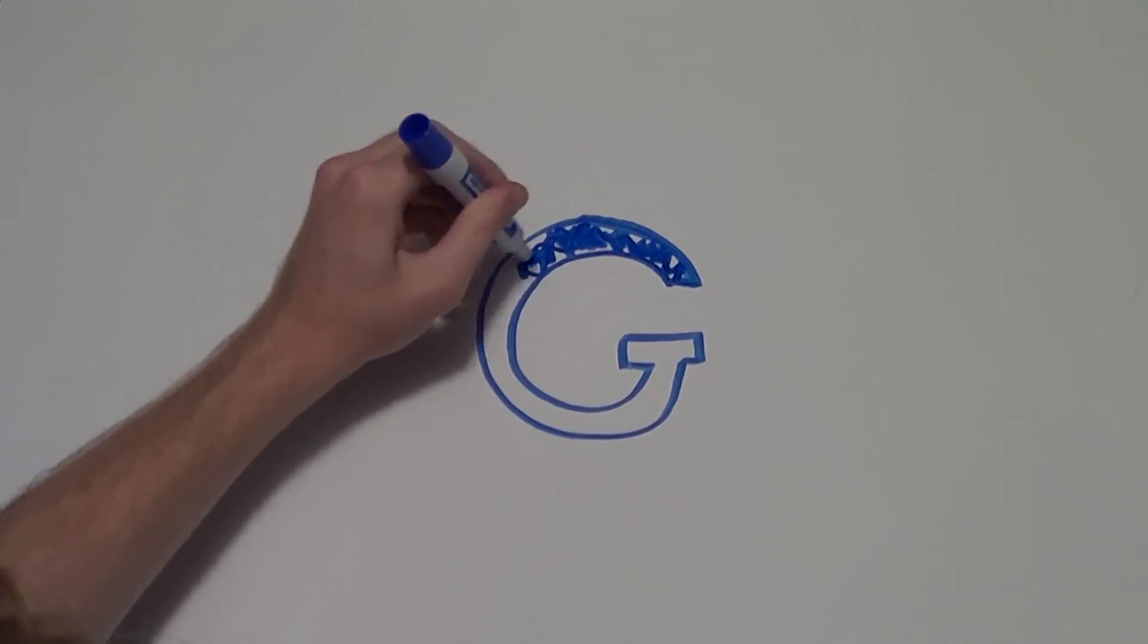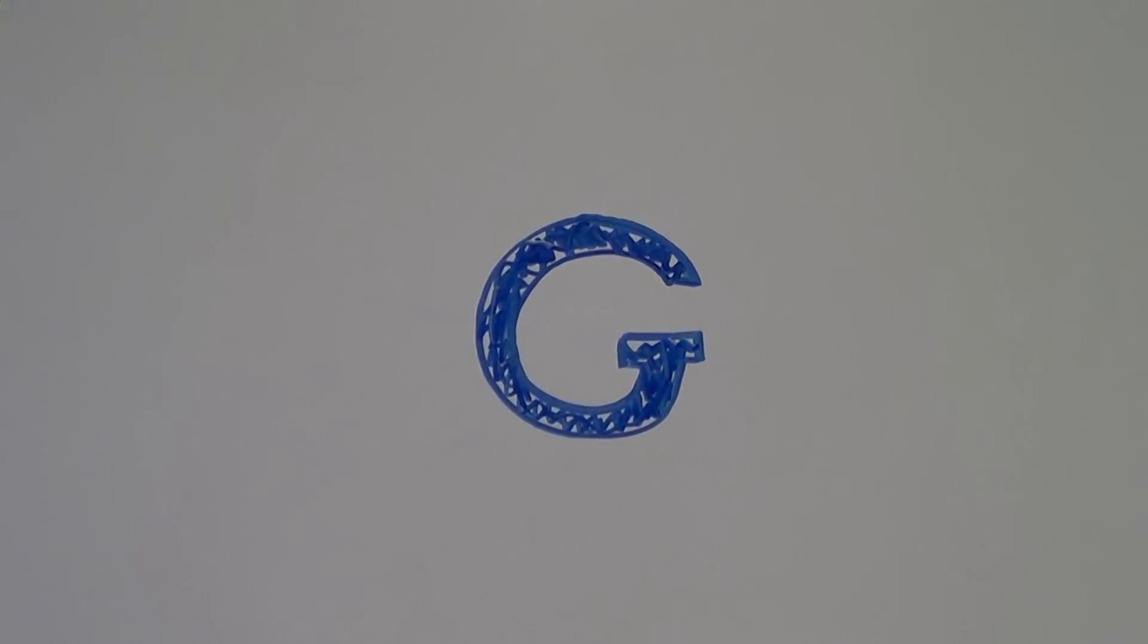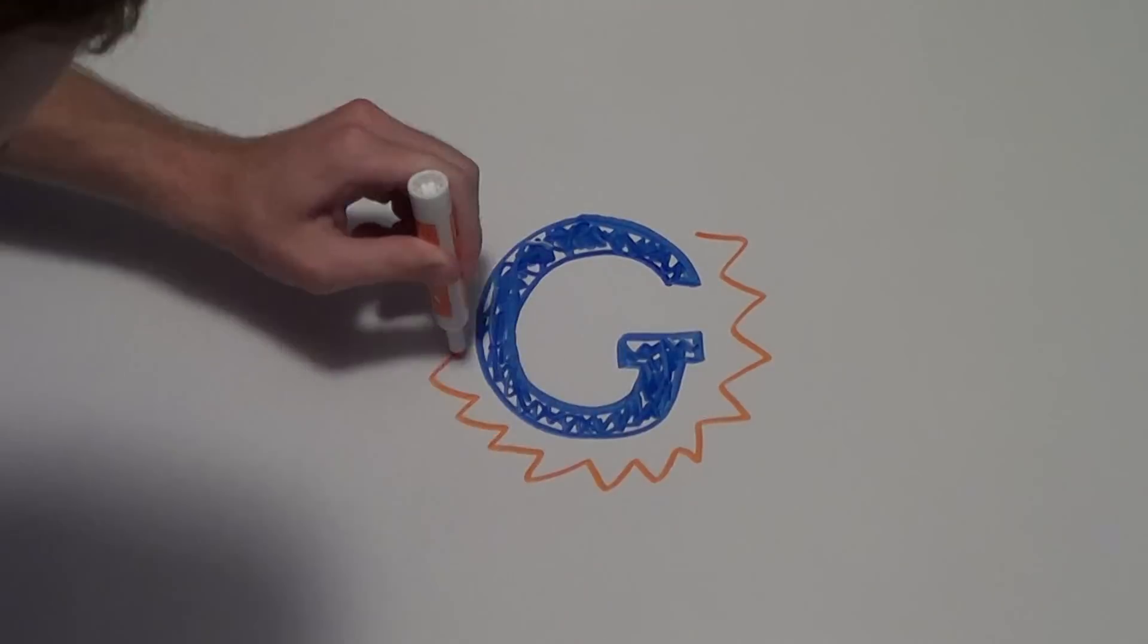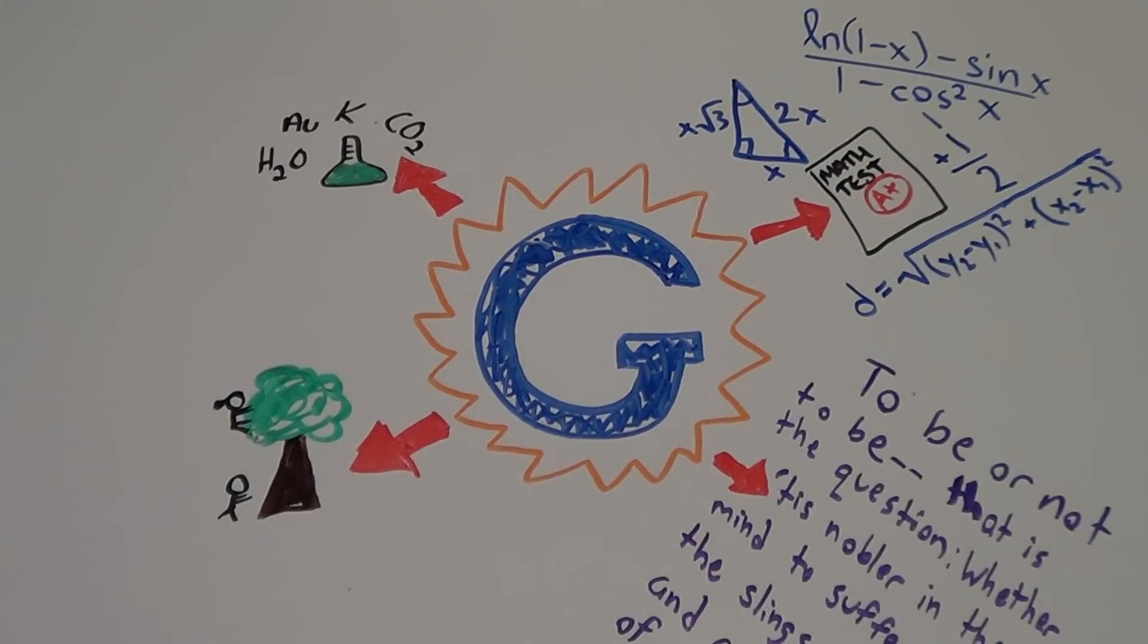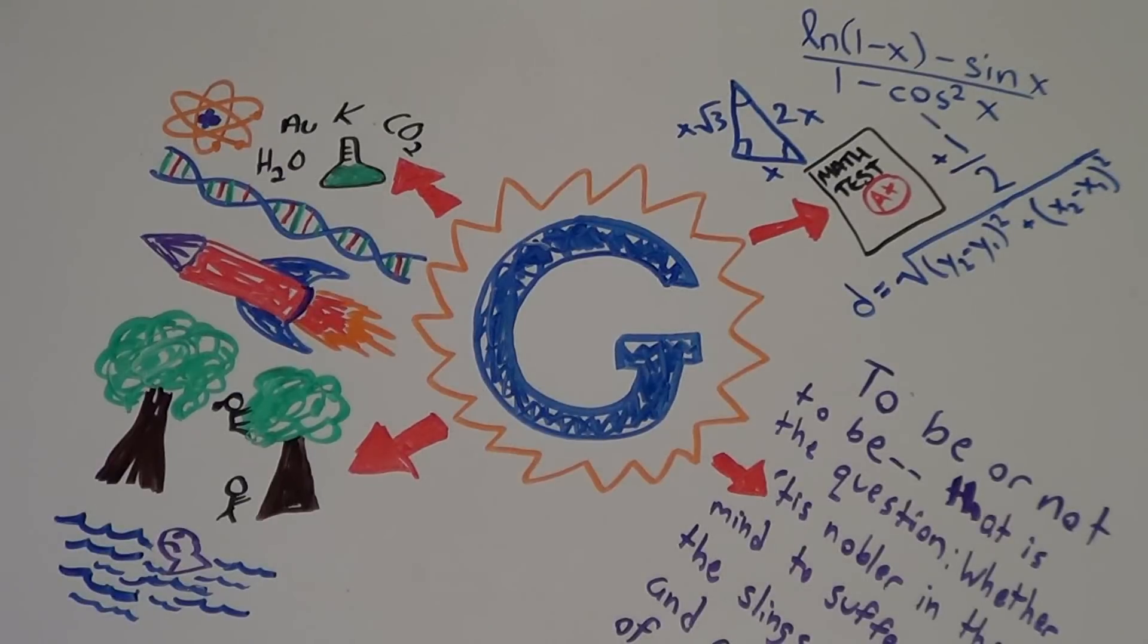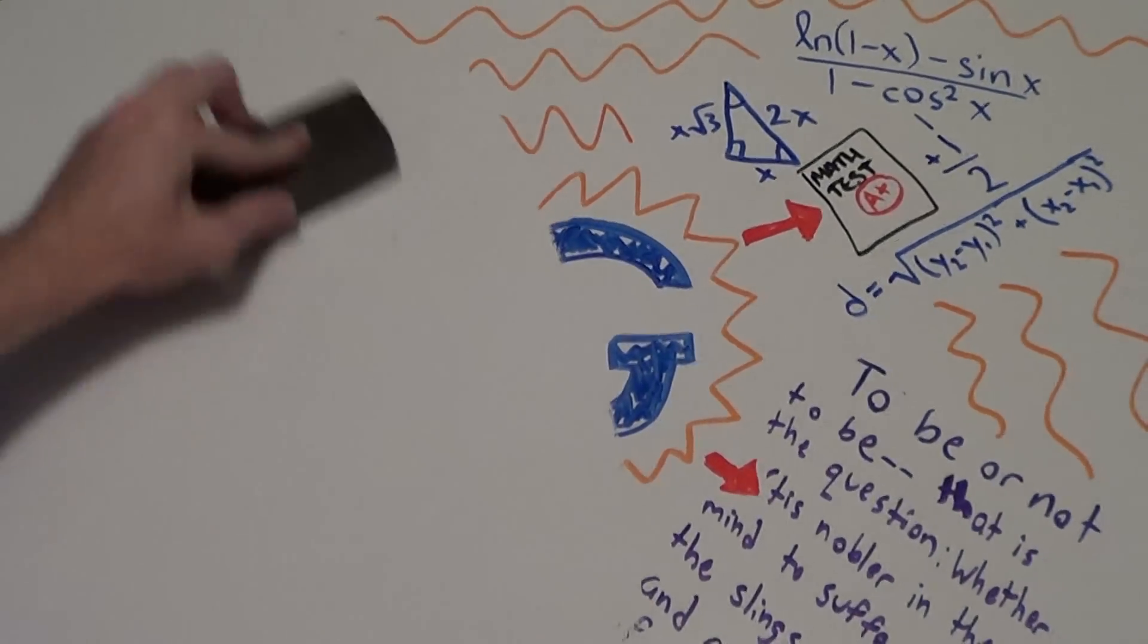Spearman's theory states that a general intelligence, G, underlies all intelligent behavior, from taking a math test to climbing a tree, and that this general intelligence can be measured on a linear scale, ranging from smart to not-so-smart.